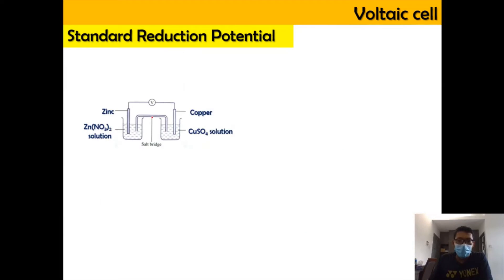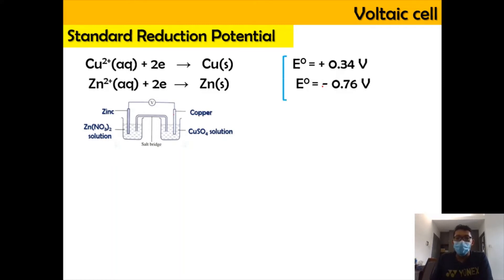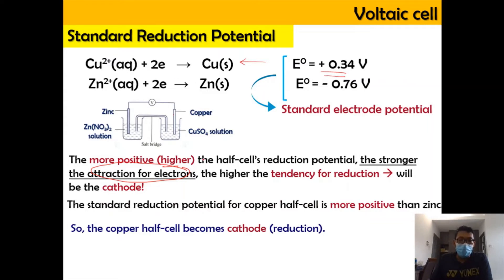Now, if we connect zinc and copper together and don't know which is more electropositive, we can compare their E⁰ values. The more positive standard electrode potential indicates a stronger attraction for electrons and a higher tendency to undergo reduction — so that element will be the cathode. Therefore, copper (+0.34 V) becomes the cathode and zinc (−0.76 V) becomes the anode.